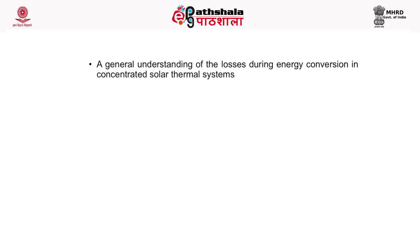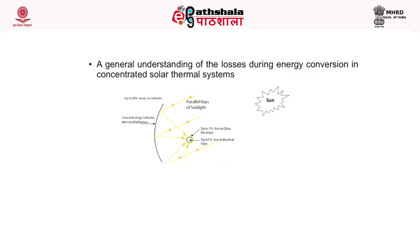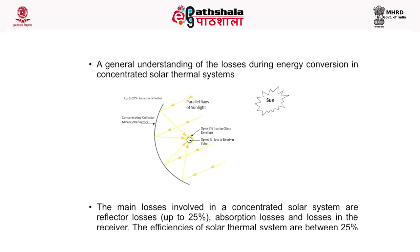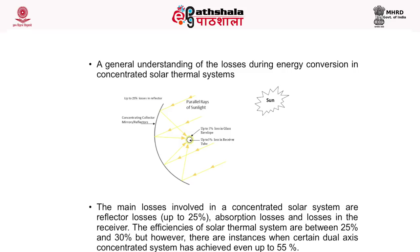This picture shows a general understanding of the losses during energy conversion in a concentrated solar thermal system. The main losses are reflector losses of up to 25%, plus absorption losses and losses in the receiver. The efficiencies of solar thermal systems are between 25% and 30%. However, there are instances where certain dual-axis concentrated systems have achieved even up to 55%.